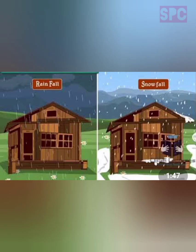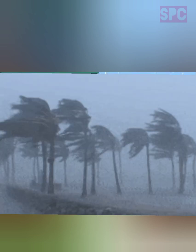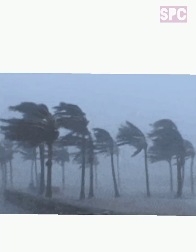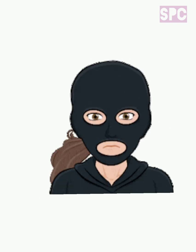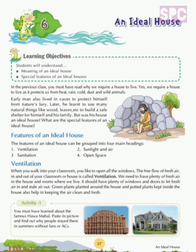We all know that the basic function of all these different types of houses is to protect us from harsh weather conditions, wild animals and thieves. There are some properties which make these houses ideal. An ideal house means a perfect house to live in. What are these properties or special features?